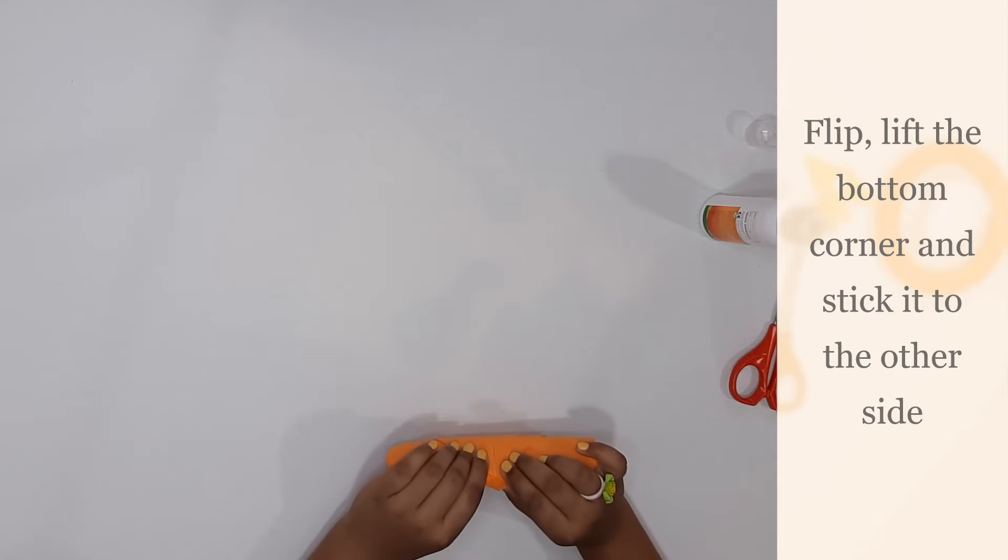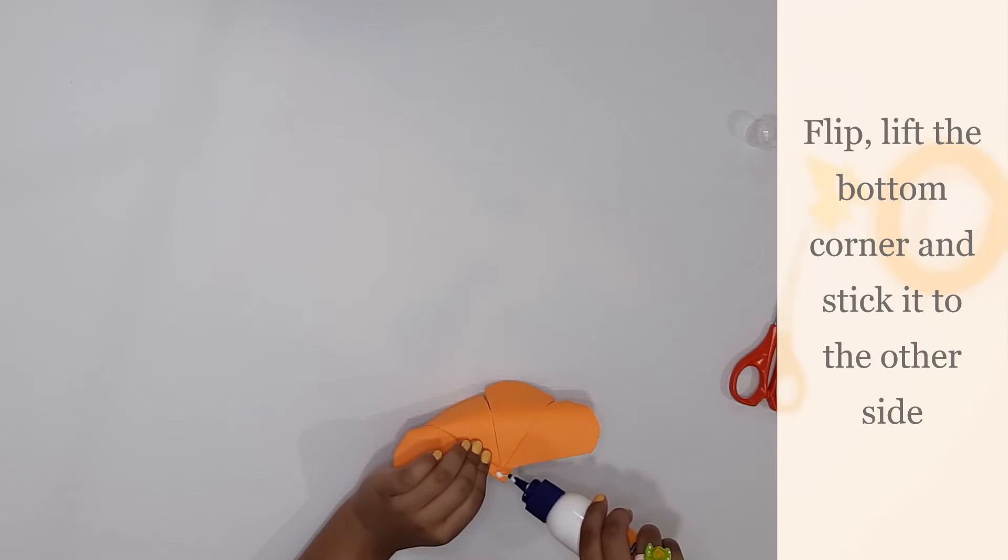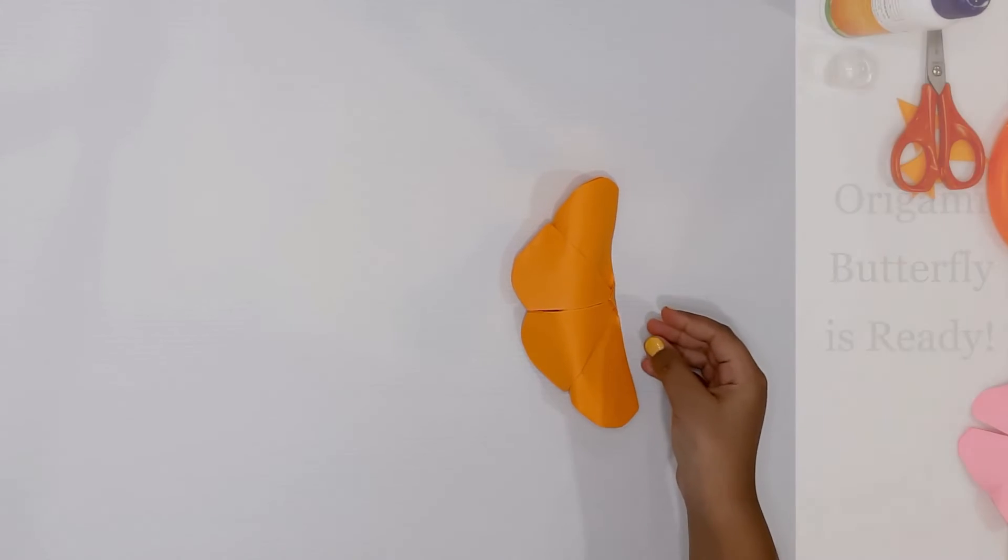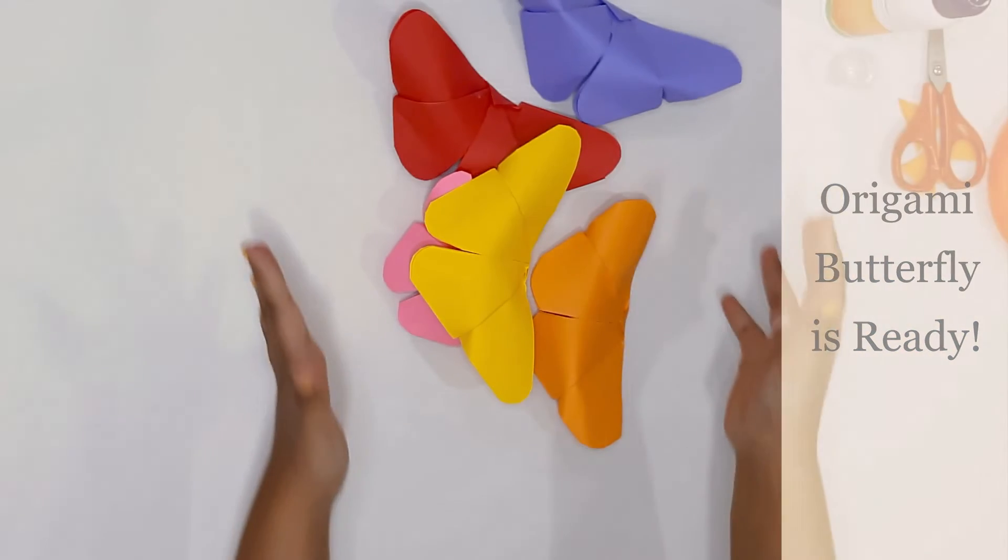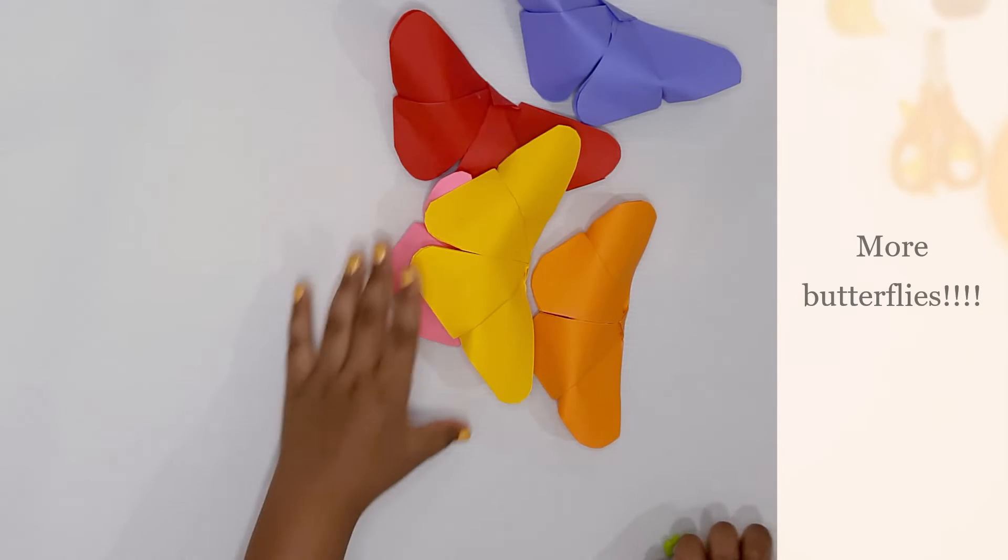Now take the glue, apply it on this corner, fold it. You stick it. Hooray! Our origami butterfly is done. I also made a few more. You can also make cute little butterflies using little squares like this one.